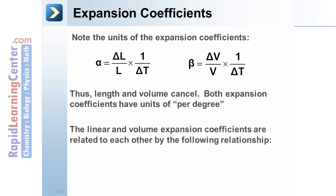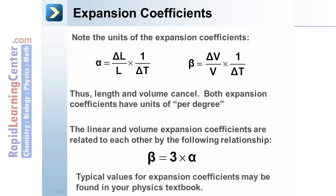The linear and volume expansion coefficients are related to each other by the following relationship. Beta equals 3 times alpha. The volume expansion coefficient equals 3 times the linear expansion coefficient. Typical values for both of these would be found in your physics text. This is not something that you usually have to memorize.